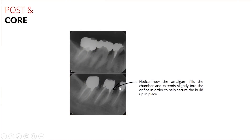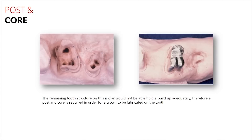Notice the amalgam in the core scenario penetrates down into the chamber and uses the existing walls to help hold it into place. When we don't have an opportunity to engage all those walls and the chamber, we're going to have to look to a different method of holding that core buildup material in place. This picture here is an example of a situation in which the wall structure or the natural tooth structure is insufficient for holding something like an amalgam core buildup. So how can we get the core to stay on and be held onto this tooth?